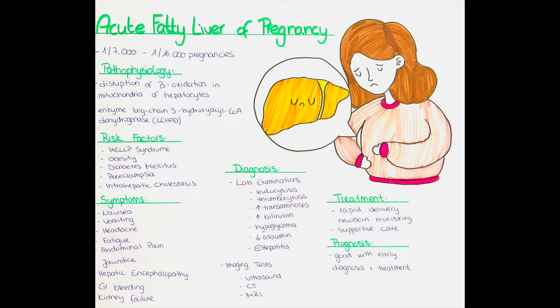In the further course, jaundice and hepatic encephalopathy can occur. In severe cases, gastrointestinal bleeding, kidney failure, and in the worst case coma and death can occur.